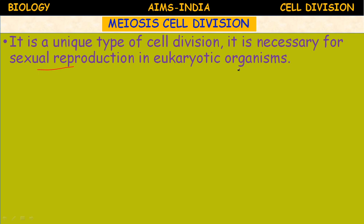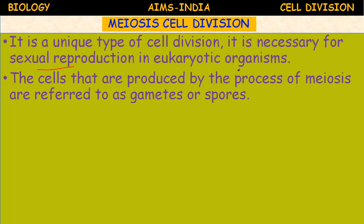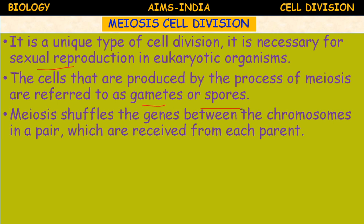Meiosis involves two sequential cycles of nuclear and cell divisions. The cells produced by the process of meiosis are referred to as gametes, spores, or reproductive cells. Meiosis shuffles the genes between the chromosomes in a pair, which are received from each parent, so genetic recombination takes place. Crossing over of chromosomes occurs in the meiotic division — crossing over means shuffling of genes between chromosomes in a pair, one from the male parent and one from the female parent.